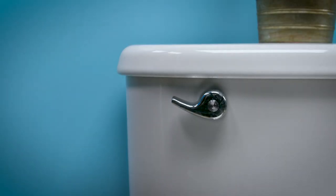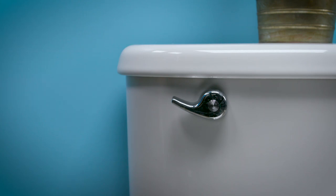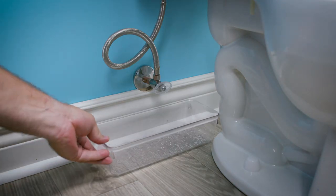Once the water to the tank has been shut off, flush the toilet to empty the tank. As the tank will not empty completely, make sure to have a bucket handy for when you disconnect the hose.